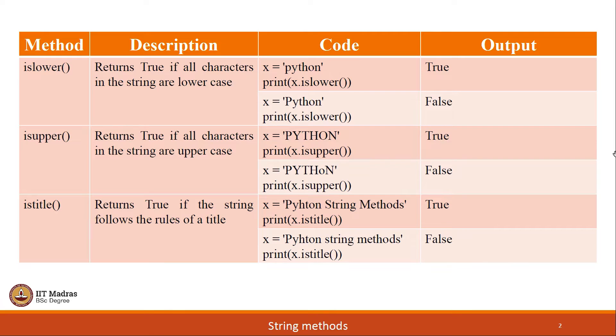Next set of string methods are islower, isupper and istitle. These three methods are very similar to what we saw in previous slide. With lower, upper and title methods, we were actually converting the input string to its equivalent form. But in case of these three methods, we are not actually converting any string, we are simply checking whether the input string is in a lowercase form or not, whether all the characters in the input string are uppercase letters or not.